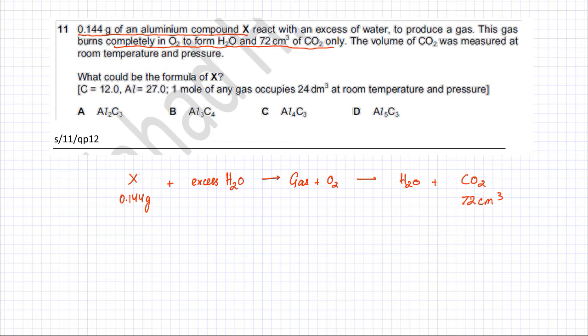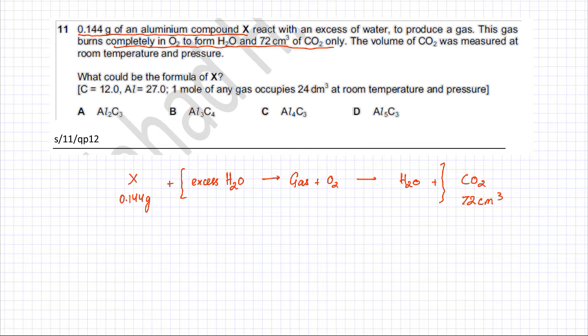The middle part of the reaction is essentially irrelevant because no masses or other information are given about it. We'll be solving this question using a trial and error method, picking option A first to see whether it's correct.